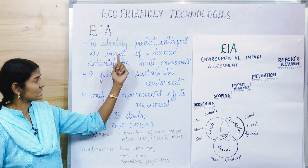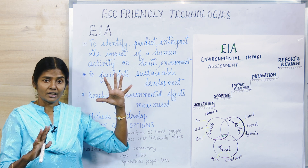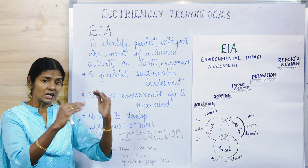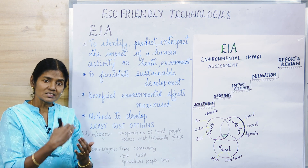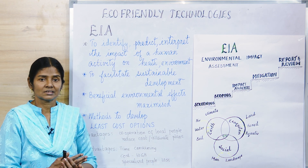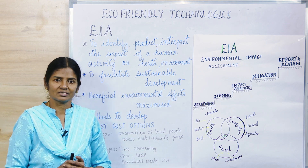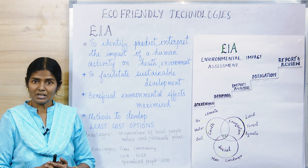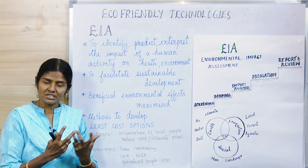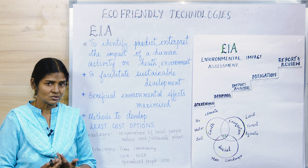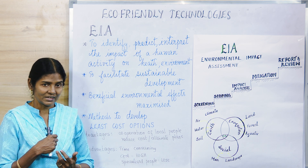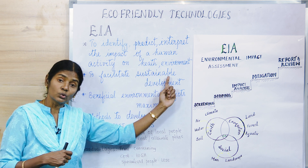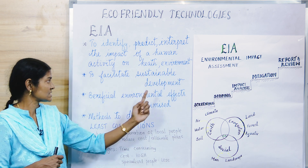EIA is actually to identify and to predict what are the impacts that a project can give. If you are starting a human activity, what is its impact on human health? For example, if you have a thermal power plant near your house, a lot of smoke is coming out, the atmosphere is heated up, and there is a lot of fly ash — so it is affecting your health. What does it do on the environment? That's part of the assessment.